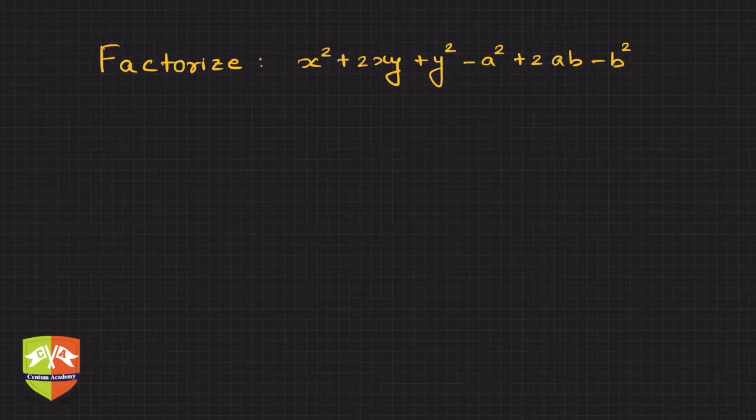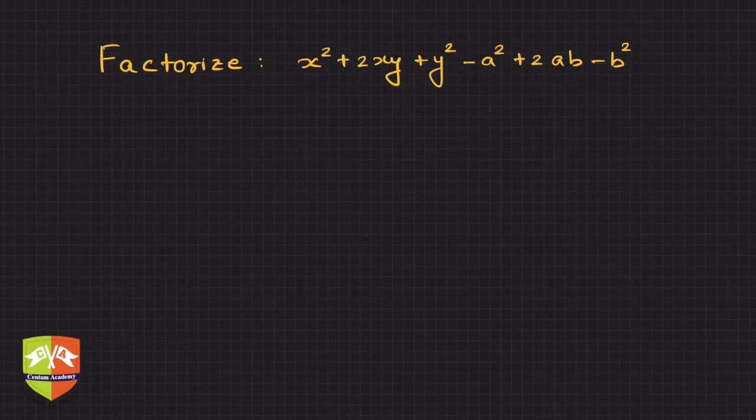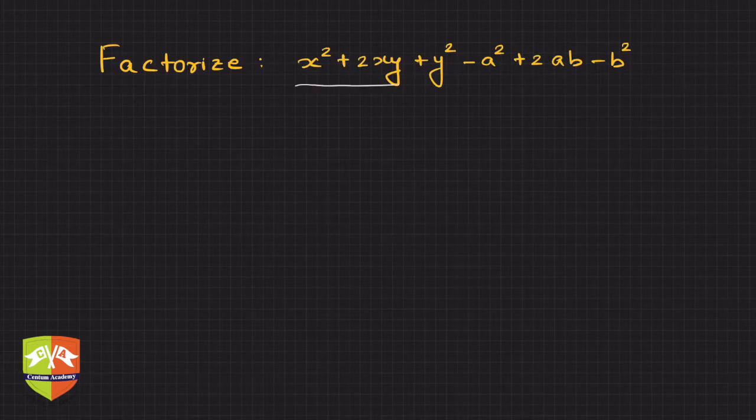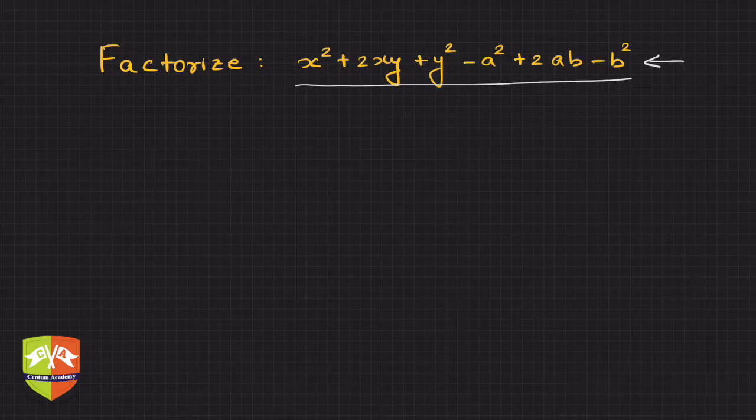Then take up a standard textbook and start factorizing. The question here says there are six terms, and you have to factorize—that means you have to convert or find out factors whose product will give you this expression.